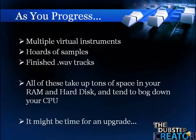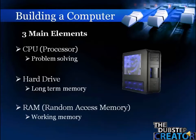As you progress in music production, running all these different virtual instruments and samples — especially when you're finished with a track — a .wav file can take up a lot of space. All these different things take up space in your RAM and hard disk and can bog down your CPU. When you start running into problems like this it might be time for an upgrade. The three main elements to building a computer are the CPU or processor, the hard drive which is long-term memory storage, and the RAM which is more short-term memory for running applications.